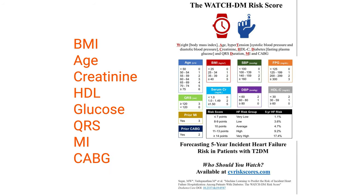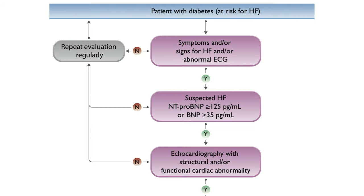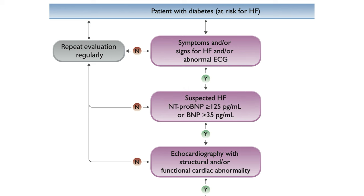The WatchDM Score uses body mass index, age, blood pressure, serum creatinine, HDL, fasting blood glucose, QRS duration, previous MI, and coronary bypass grafts. We can also use biomarkers: we exclude heart failure if BNP is less than 35 (or less than 105 in atrial fibrillation). For NT-proBNP, we exclude if it's less than 125 (or less than 365 in atrial fibrillation), keeping in mind that values will be lower in obese patients and women, and higher in chronic kidney disease or advanced age.